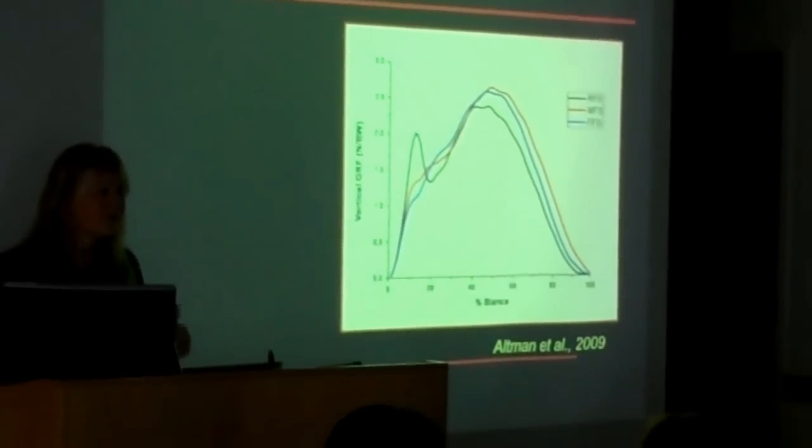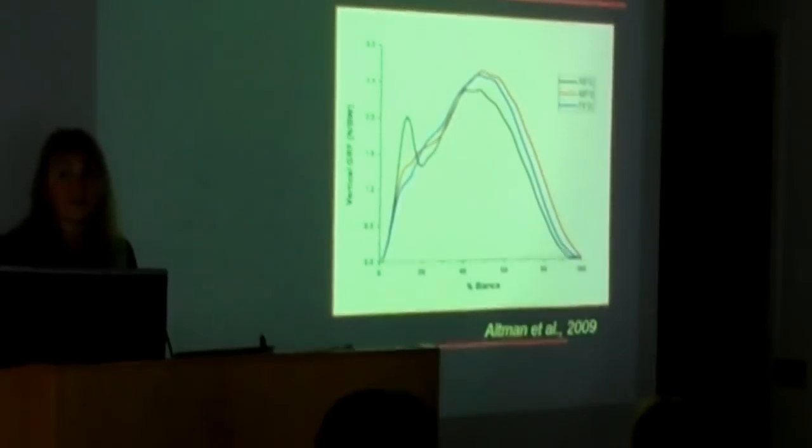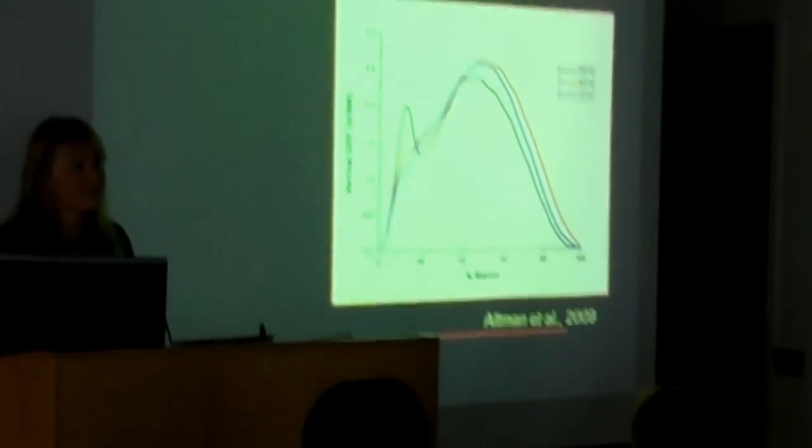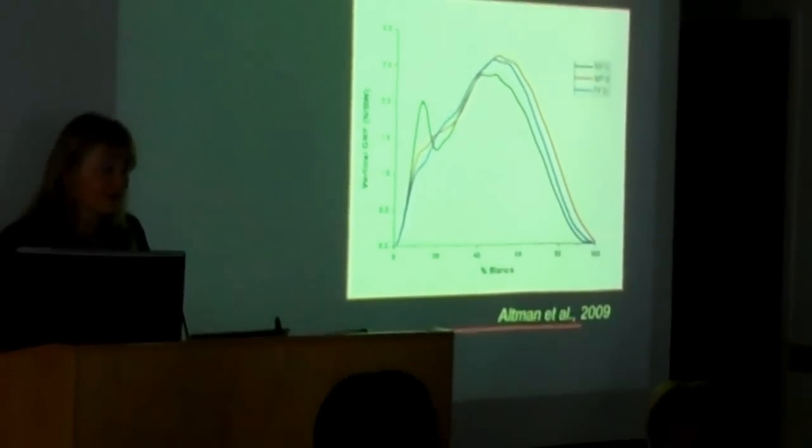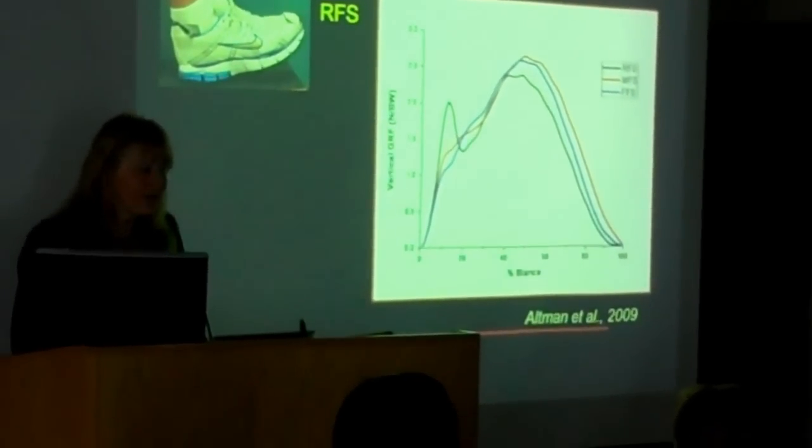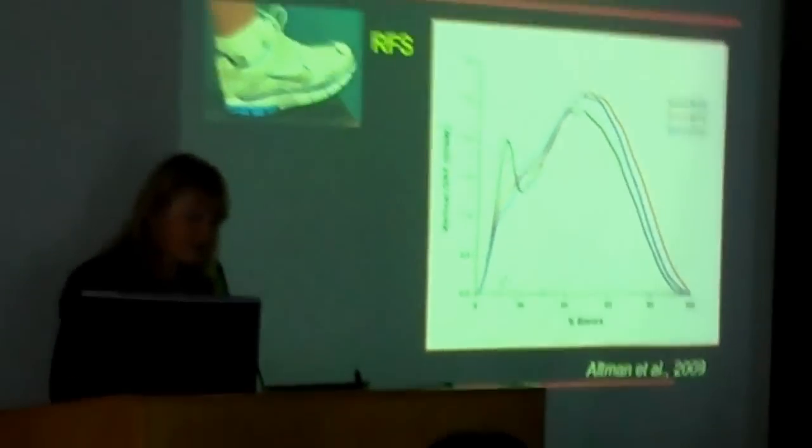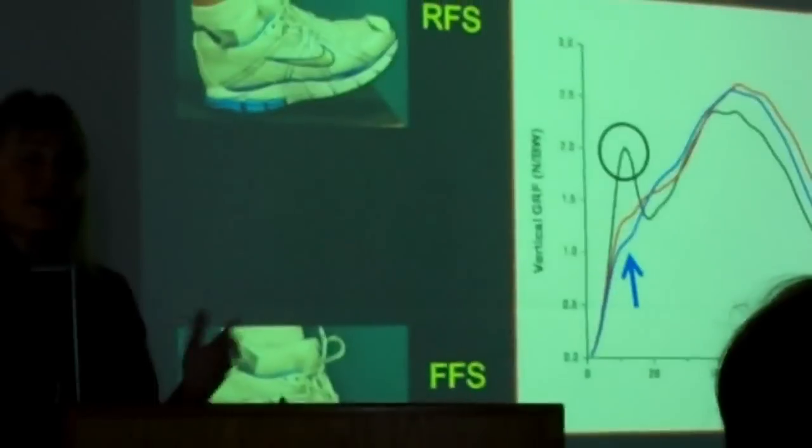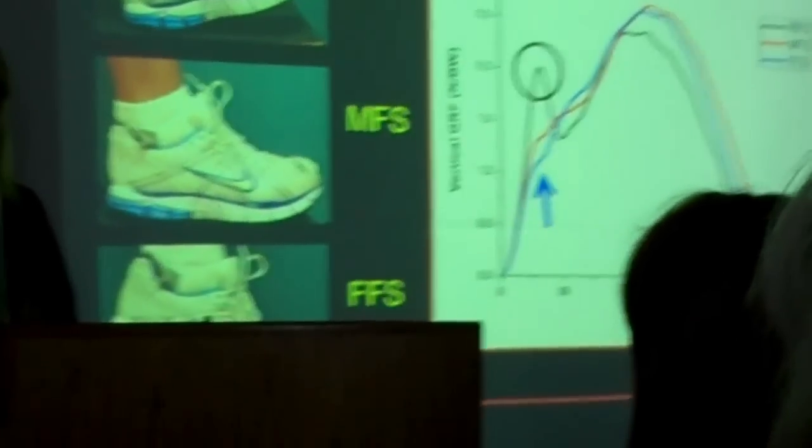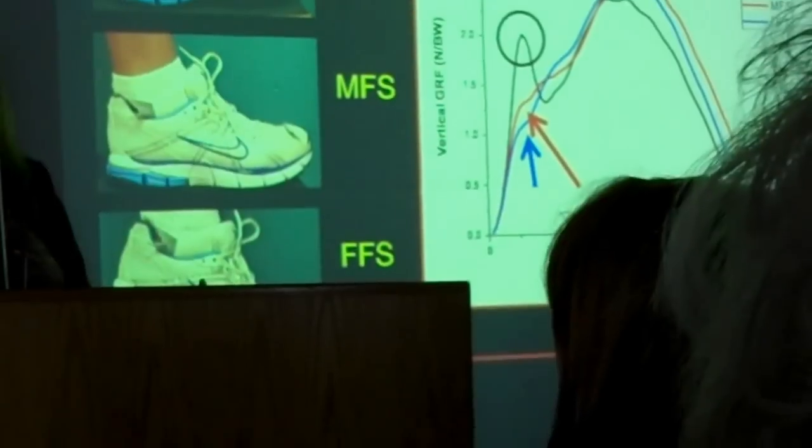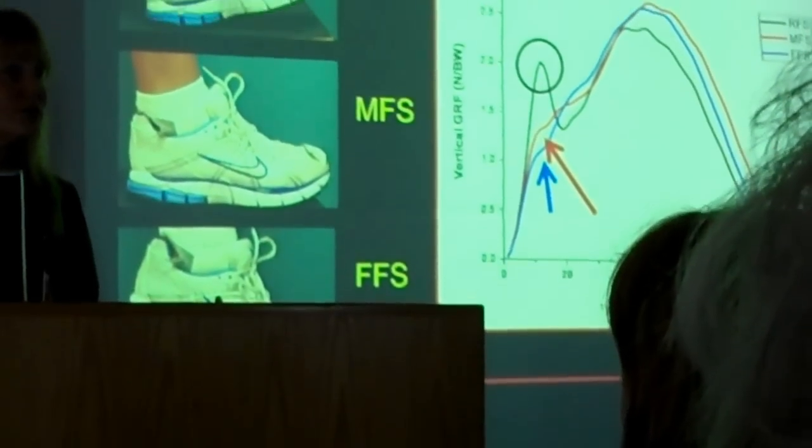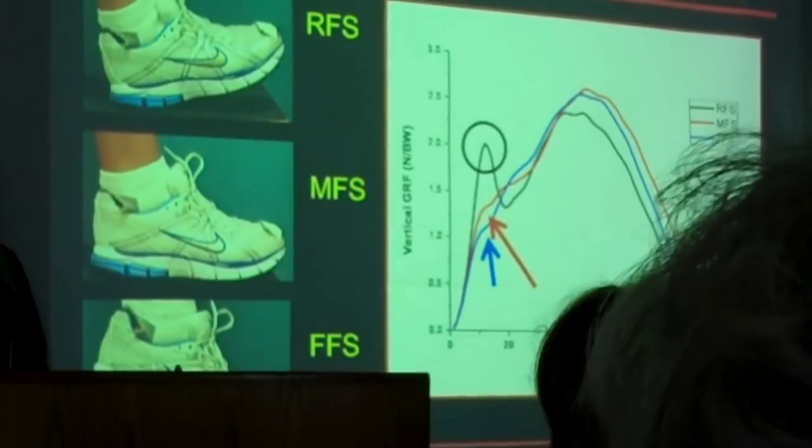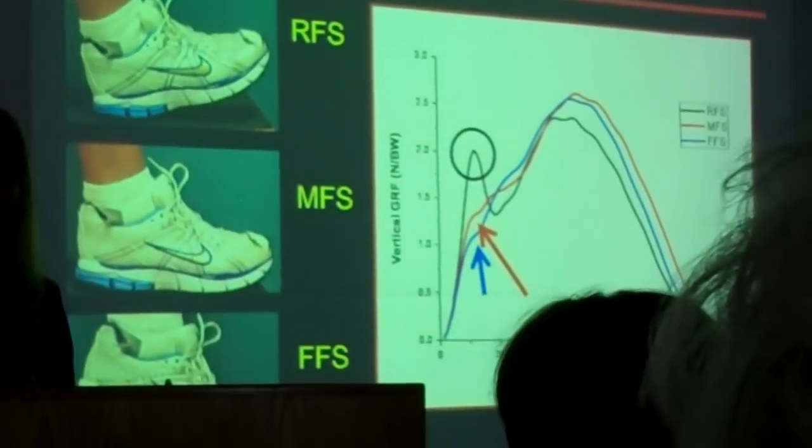Now I often get asked, well, how do they do this? How do people change their loading? We don't tell them how to do that. We allow them to choose the strategies they want as long as they aren't strategies that look like real extreme maladaptations. Foot strike pattern is one way that they do it. So this is the vertical ground reaction force I've shown you before that has a very clear impact peak with a rear foot strike. A forefoot strike pattern, as you can see, has an eliminated impact peak and the load rates are significantly less. It's interesting, the midfoot strikers tend to fall somewhere in between. Sometimes they look a little more like a rear foot striker and sometimes they look a little bit more like a forefoot striker. But clearly, they have reduced impact peaks and reduced load rates.